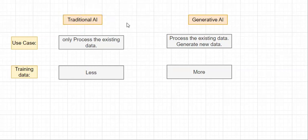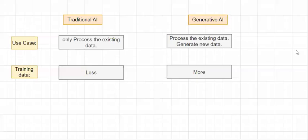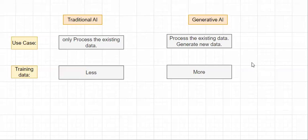Generative AI needs to generate new content based on existing content. It does this by identifying patterns and properties of the data it was trained on, and then based on those patterns and dimensions, it generates new content.